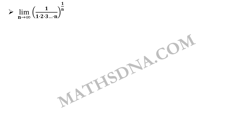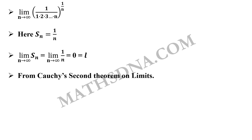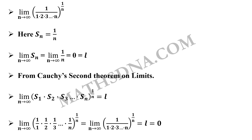For options A and B, we consider limit n→∞ of (1/1 · 1/2 · 1/3 · ... · 1/n)^(1/n). Here Sn = 1/n, so S1 = 1/1, S2 = 1/2, and so on. The limit of Sn = limit n→∞ of 1/n = 0, which is our L. By Cauchy's second theorem, the product (S1 · S2 · ... · Sn)^(1/n) also equals L = 0. Therefore option A is correct and option B is incorrect.